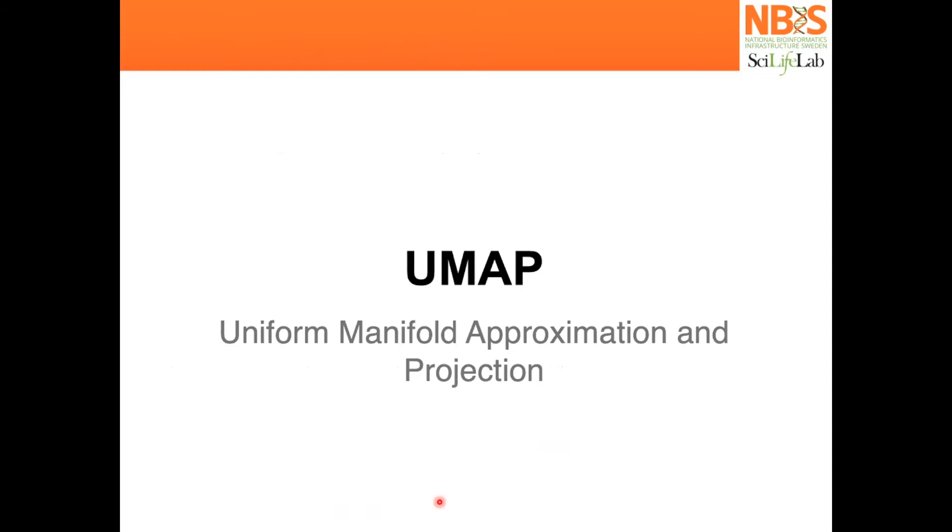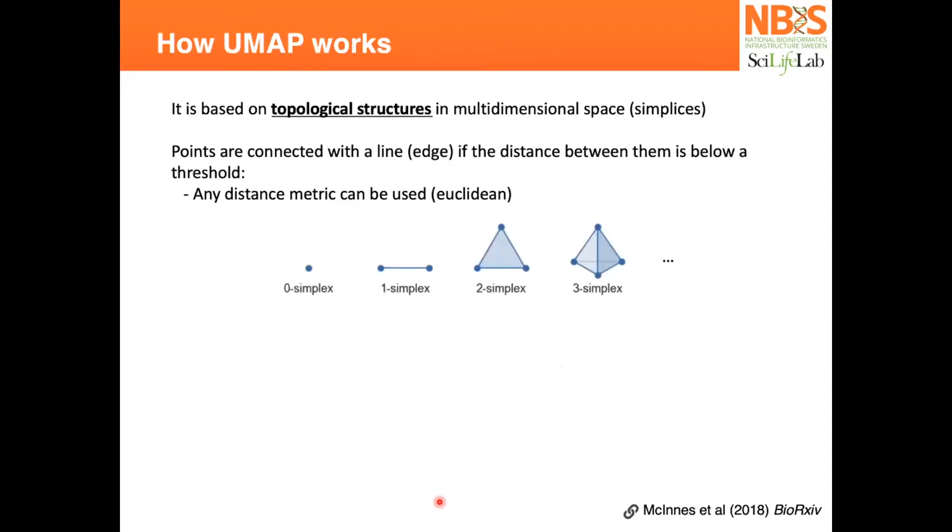UMAP stands for Uniform Manifold Approximation and Projection. It's based on the same concept as t-SNE, but it changes in a way that it focuses on topological structures in multidimensional space, which are called simplices.